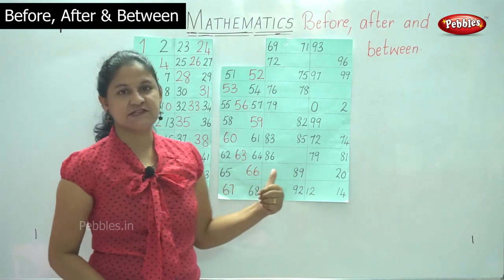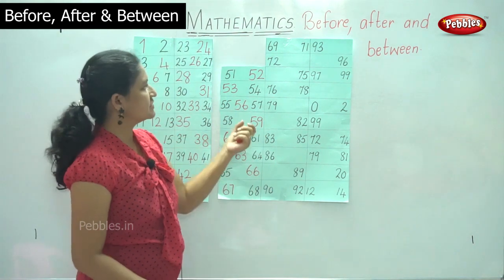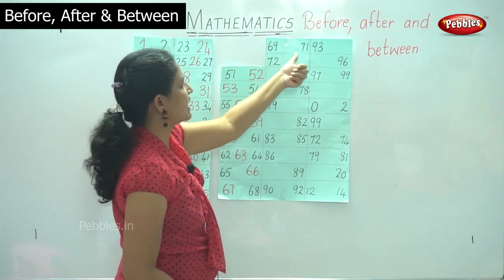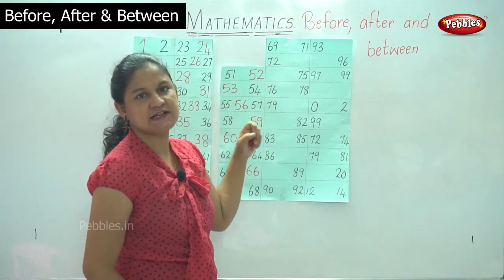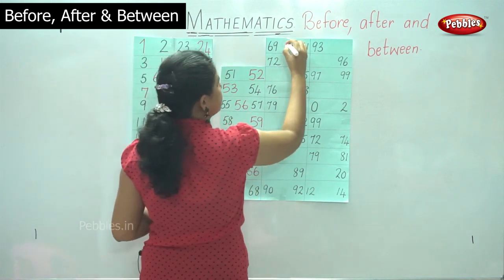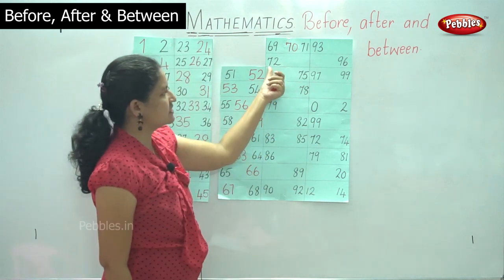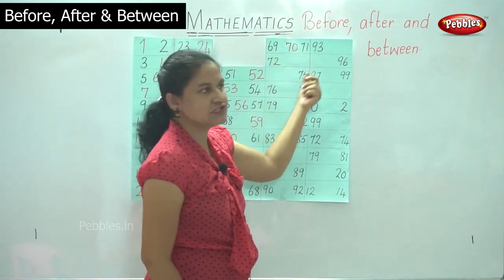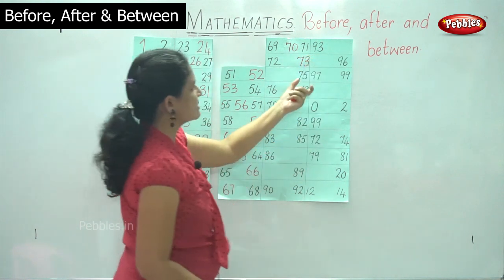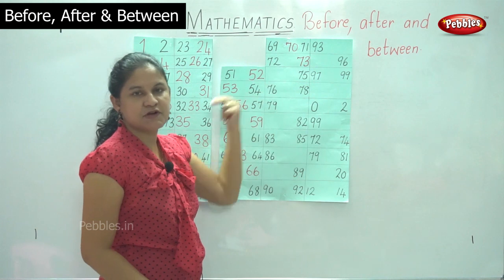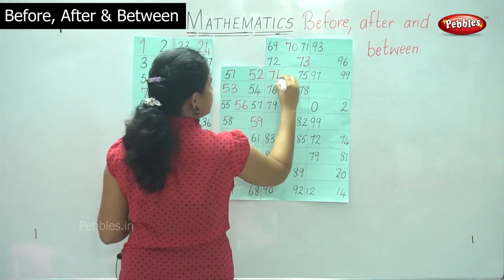By doing this, you will be able to write the numbers very easily. Next we have number sixty-nine and seventy-one, and what comes between sixty-nine and seventy-one is number seventy. We have number seventy-two, and what comes after seventy-two is number seventy-three. We have number seventy-five, and the number that comes before seventy-five is number seventy-four.